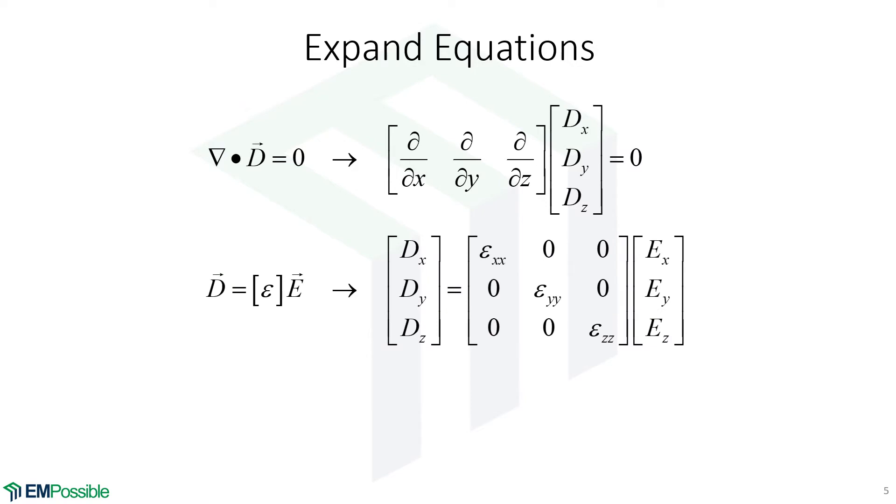We have our constitutive relation, which is really a 3 by 3 tensor multiplying our electric field. We've set these off-diagonal components all to zero. That's not absolutely necessary, but it will complicate the analysis. We'll restrict ourselves to what we call diagonally anisotropic materials. This lets us incorporate some anisotropy, but not all. It is certainly possible to have permittivity in these off-diagonal positions, but it complicates the analysis.